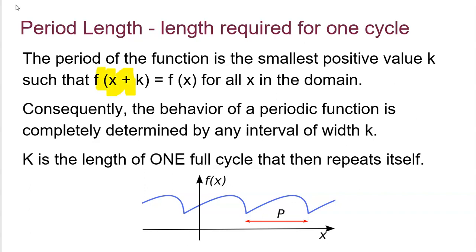Let me explain this notation. If this point is x, and we move over k units, that point is x + k. The period length is k — from beginning to end. Then another k takes us to x + 2k. So k is simply the length of one full cycle, which we call a period. The period is always a positive number, and you can look at any one cycle to find that period length.